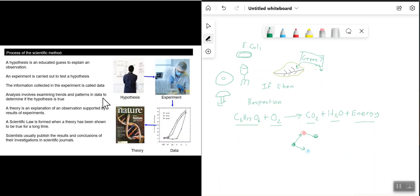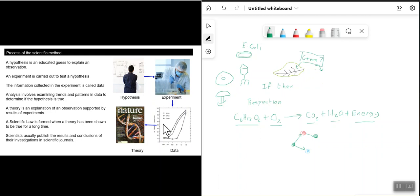Getting back to the process of the scientific method — a hypothesis is an educated guess to explain something you have observed. An experiment is carried out to test the hypothesis. The information collected in the experiment is called data, which you record in tables. You can then make graphs from the tables to analyze the data.